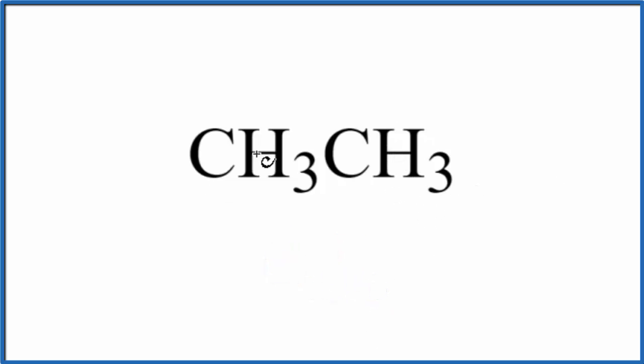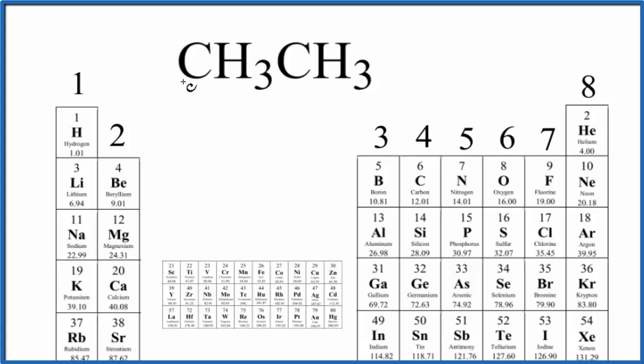So to write the Lewis structure for ethane CH3CH3 here, let's first count the valence electrons up. So carbon right here on the periodic table, that's in group 14, sometimes called 4A, 4 valence electrons. So we have 4 valence electrons for carbon,